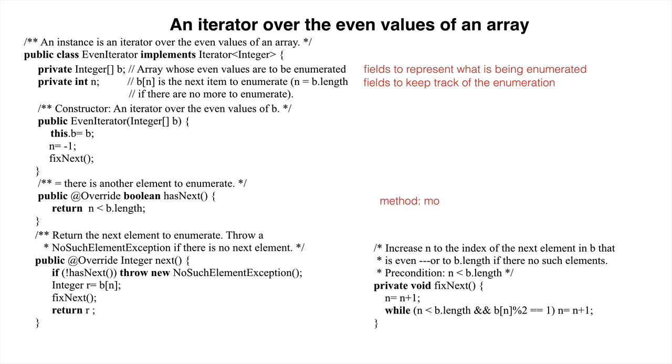Depending on how complicated it is to find the next element to be enumerated, there may be a method like fixNext. The constructor saves its parameters and truthifies the class invariant.